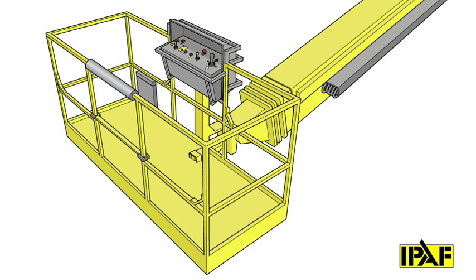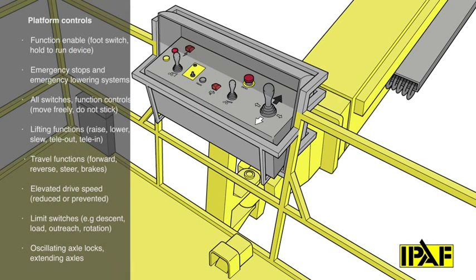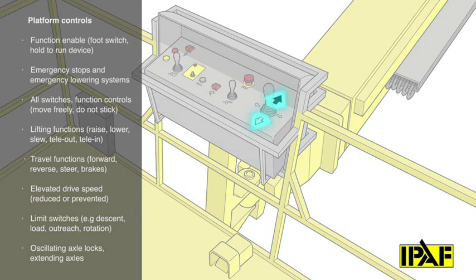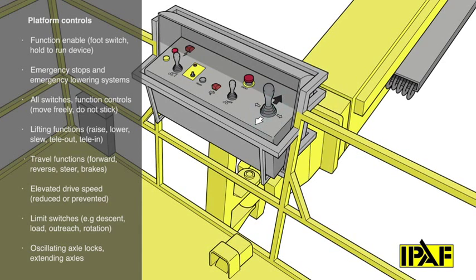Use three points of contact for access to the platform through the platform gate. Attach and adjust the harness to one of the anchorage points provided. The platform controls decals should be clear and visible for each control. Ensure directional arrows match the chassis direction.